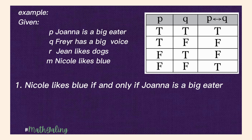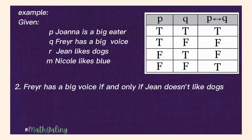Example 1: 'Nicole likes blue' — that is true (M) — if and only if 'Joanna is a big eater' — that is also true (P). They are connected with 'if and only if,' so that will be true. Example 2: 'Freya has a big voice' — that is Q and it is true — if and only if 'Gene doesn't like dogs' — that is false because our R states that Gene likes dogs. So Q if and only if R will be false.